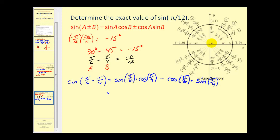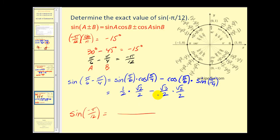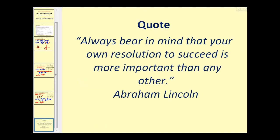With a common denominator of four, the numerator is square root two minus square root six, giving the exact value of sine of negative pi over twelve as the quantity square root two minus square root six, all over four. That's pretty much all we have time for. I hope you found this video helpful. Thank you for watching.